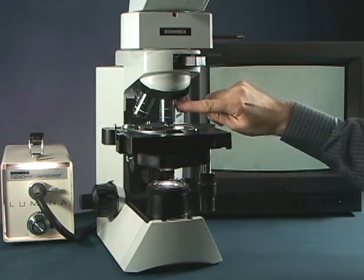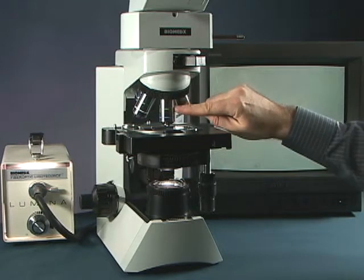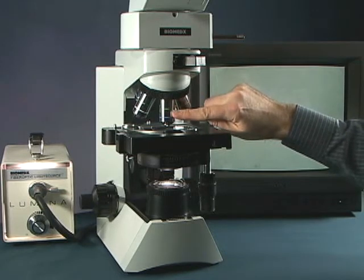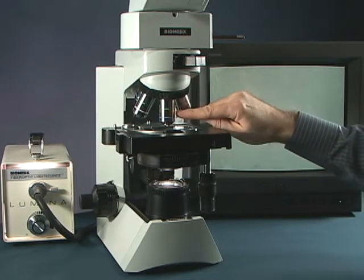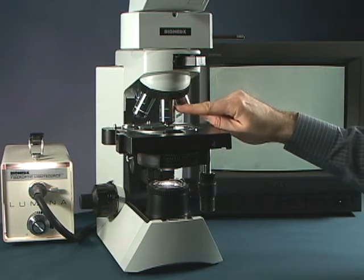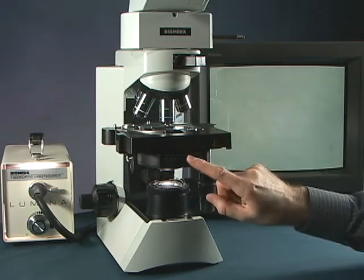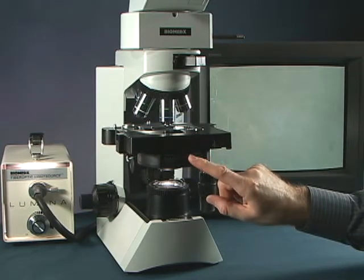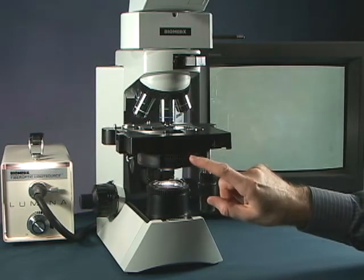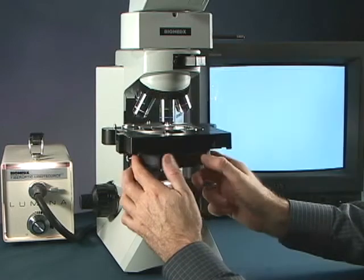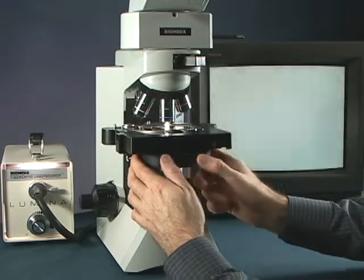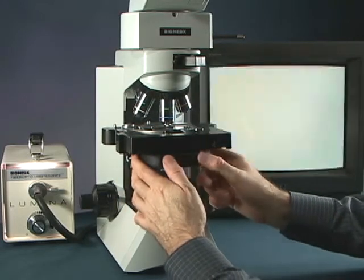Now we're going to be using a 40x objective to view this specimen. And this 40x objective is a phase objective. It actually has a little PH2 written on the barrel of the objective. That PH2 has to match PH2 on the turret condenser. If the PH2 is not here, we need to rotate the turret so the PH2 is in place.